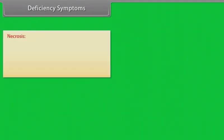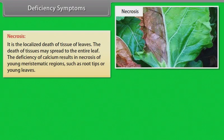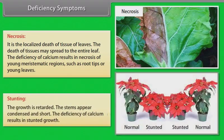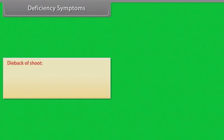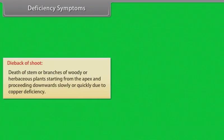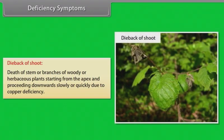Necrosis: it is the localized death of tissue of leaves. The death of tissues may spread to the entire leaf. The deficiency of calcium results in necrosis of young meristematic regions, such as root tips or young leaves. Stunting: growth is retarded, the stems appear condensed and short. The deficiency of calcium results in stunted growth. Dieback of shoot: death of stems or branches of woody or herbaceous plants starting from the apex and proceeding downwards, due to copper deficiency.